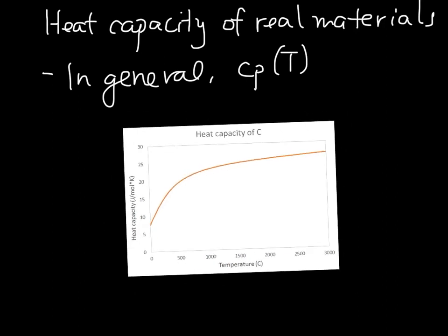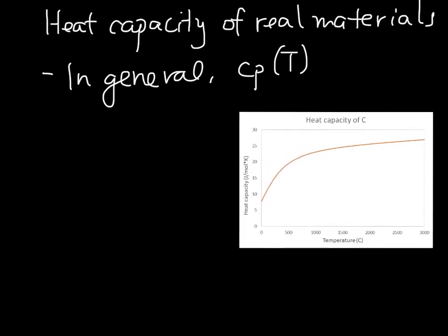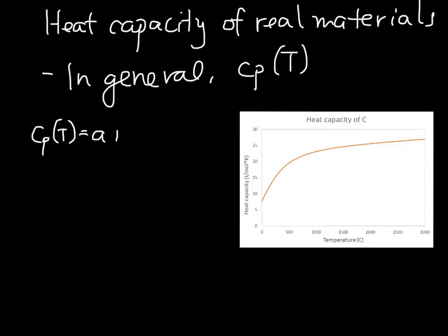In order to make it easier to tabulate these values, and because materials behave somewhat similarly, the function for heat capacity is generally given as: Cp = a + bT + cT⁻² + dT².